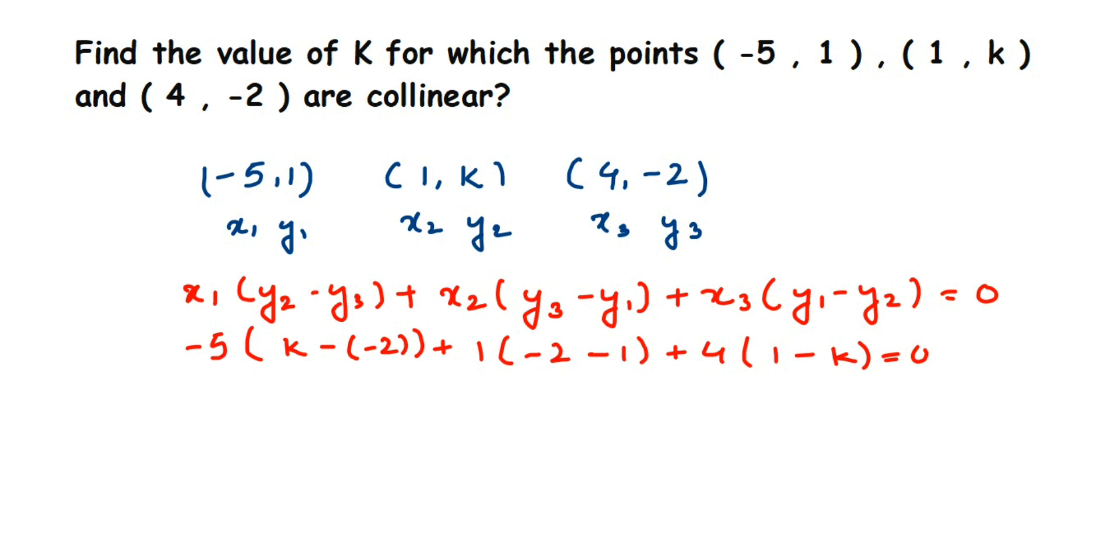Now open the brackets. So -5 times (k - (-2)), minus minus becomes plus, so k + 2. Then 1 times (-2 - 1) becomes -3. Opening the brackets, 4 times 1 is 4, minus 4k equals 0.